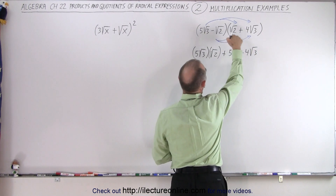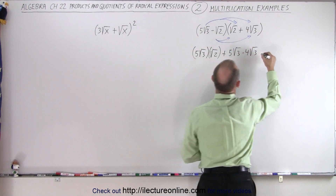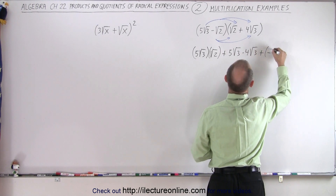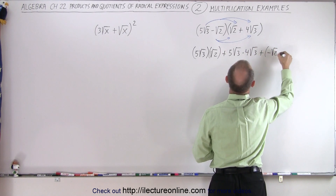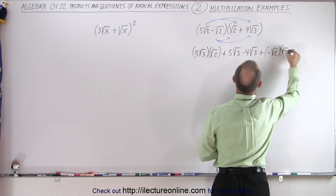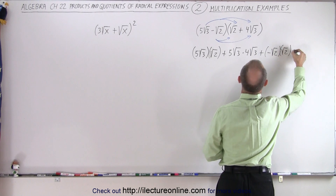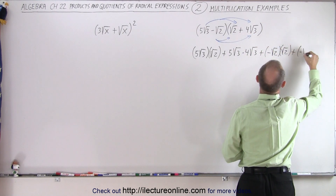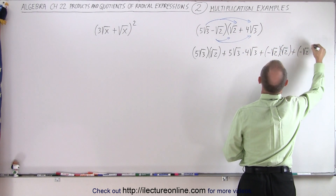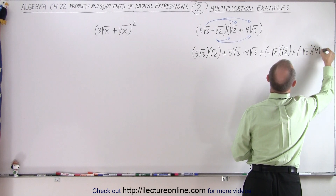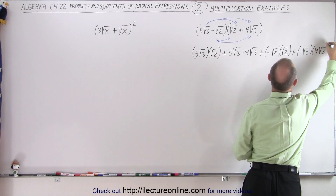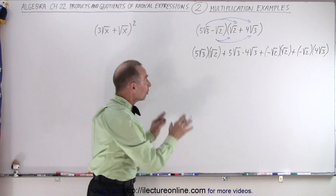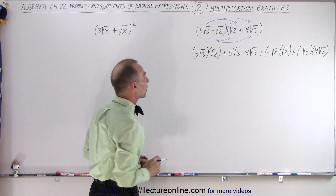Then we multiply this times this, which is plus a negative square root of two times the square root of two, and then plus this times this, which is a negative square root of two times four times the square root of three. So all we've done is simply write down the four products.